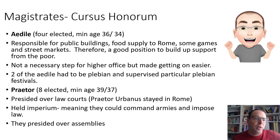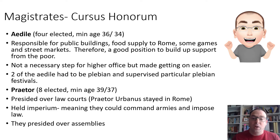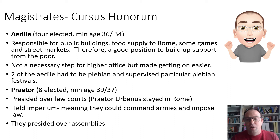The next stage up is the aedile. You had to be 36 if you were plebeian, or 34 if patrician. They were responsible for public buildings, food supply to Rome, some games, and street markets — making it a good position to build support from the poor. This was a really important position to hold to build a political career up through the different stages. It wasn't a necessary step — the quaestorship was — but it definitely made things easier if you'd held it. Two of the aediles had to be plebeian and supervised particular plebeian festivals.